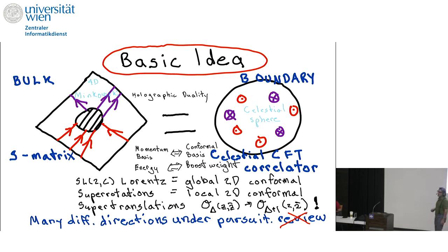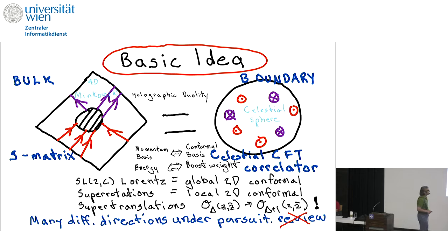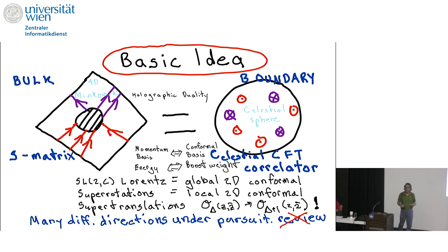Even better, in quantum gravity there's a soft theorem, and as often happens in two-dimensional theories with a global conformal symmetry, the global conformal symmetry can be seen just from the soft theorem to be enhanced to the familiar infinite-dimensional local conformal group. And so there's something that looks like some kind of conformal field theory, albeit not the usual unitary local variety, and exactly what properties it has is under active investigation.